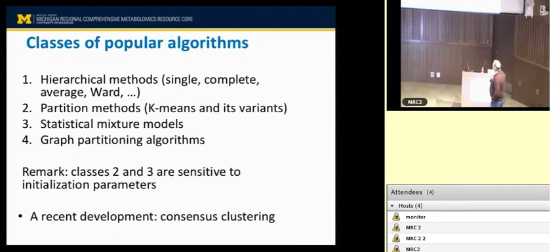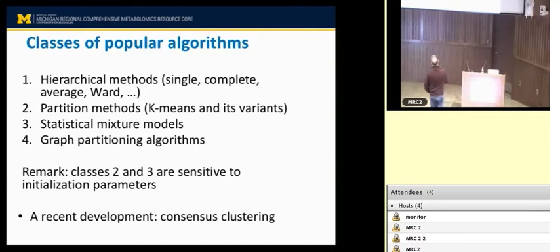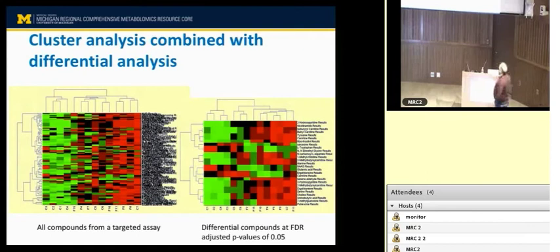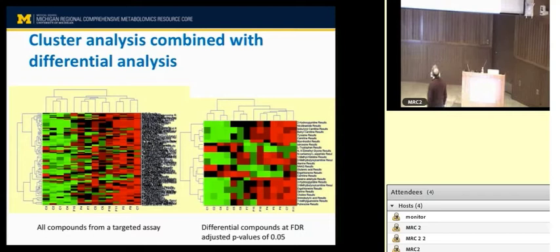Lots of algorithms are implemented in MetaboAnalyst, including variations of k-means. If you go to R, you can do much more advanced stuff, though in most cases it's not really needed — these are still very good and robust algorithms. Here I'm showing how you can combine differential analysis with cluster analysis, using all the compounds, and we see a nice clustering structure in terms of the samples.